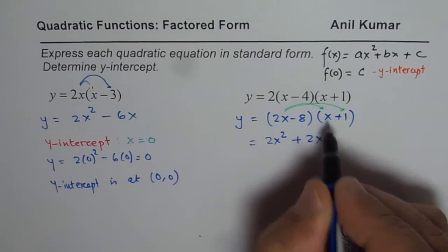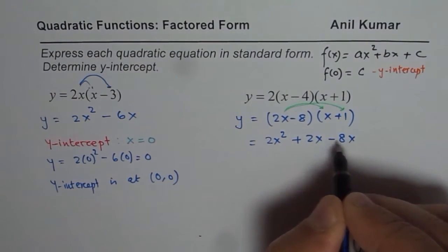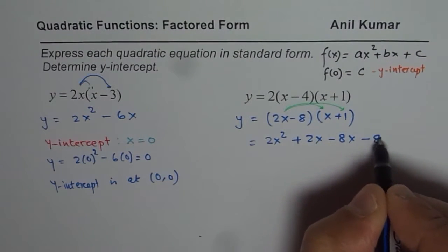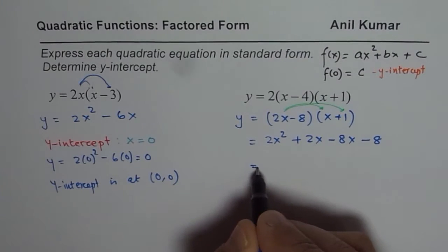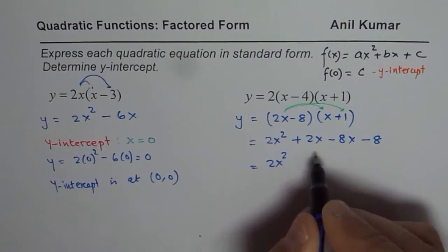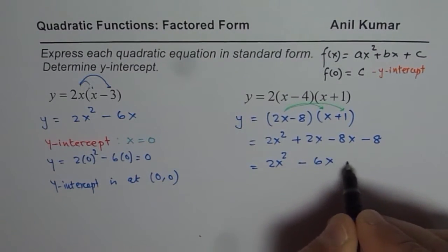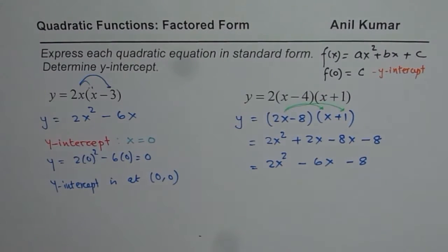Now with minus 8 we get minus 8x and minus 8. Now combine the like terms. So we have 2x². 2x minus 8x is minus 6x minus 8. So that is the standard form.